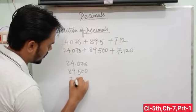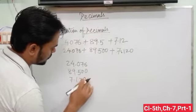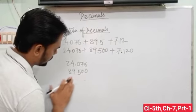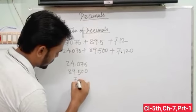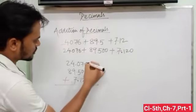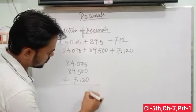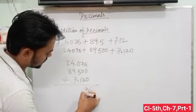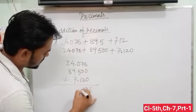So 6 plus 0 plus 0 equals 6. 7 plus 2 is 9. 5 plus 1 is 6.